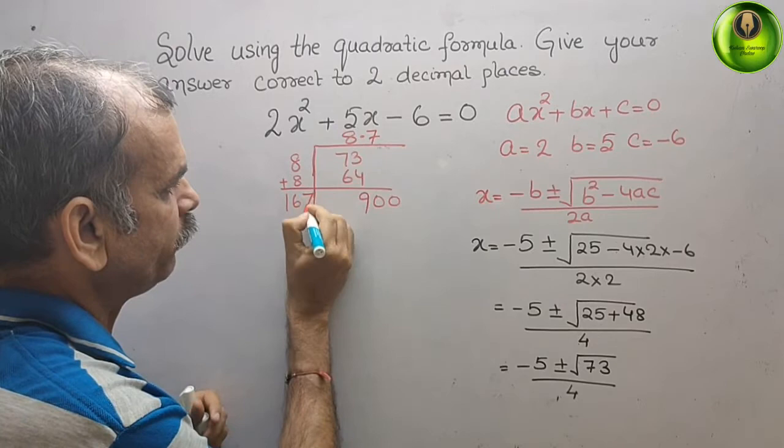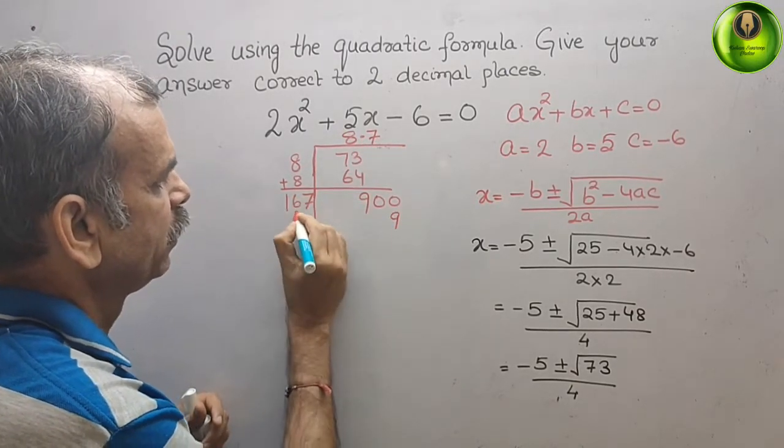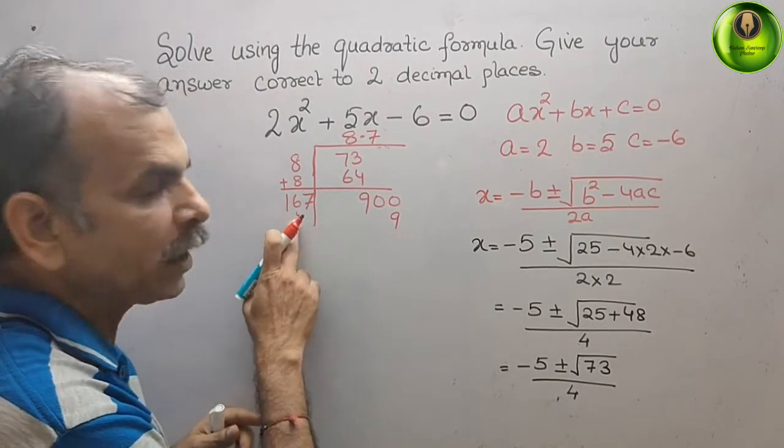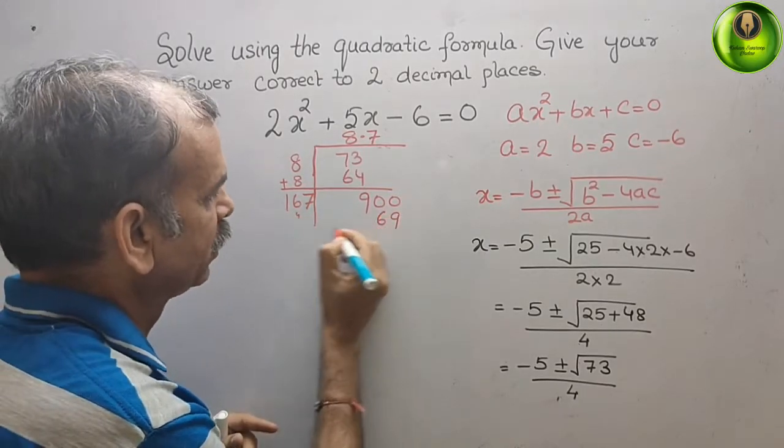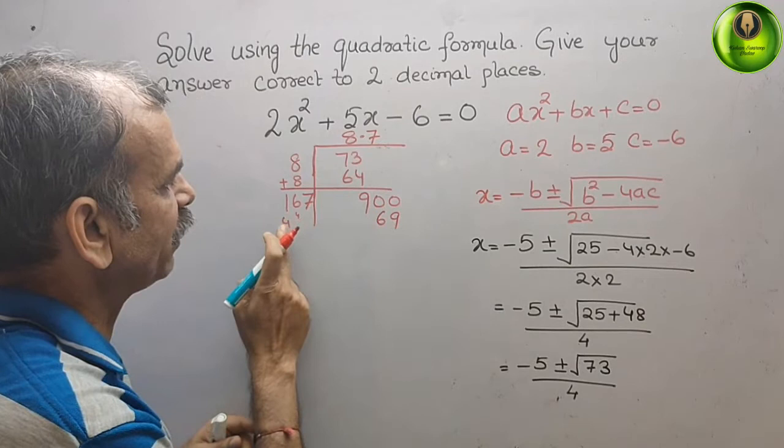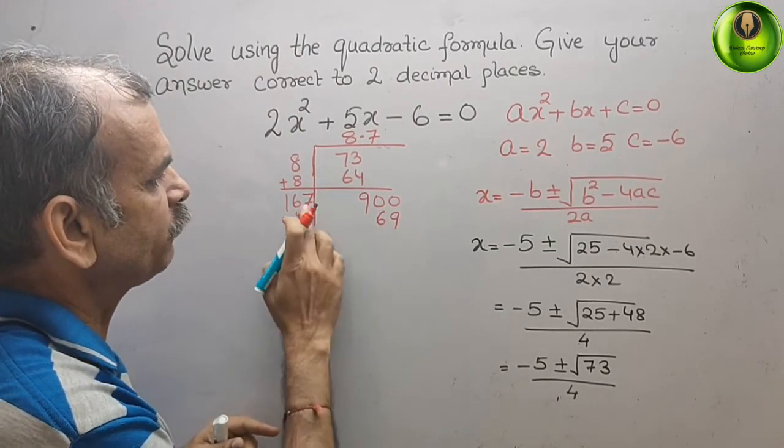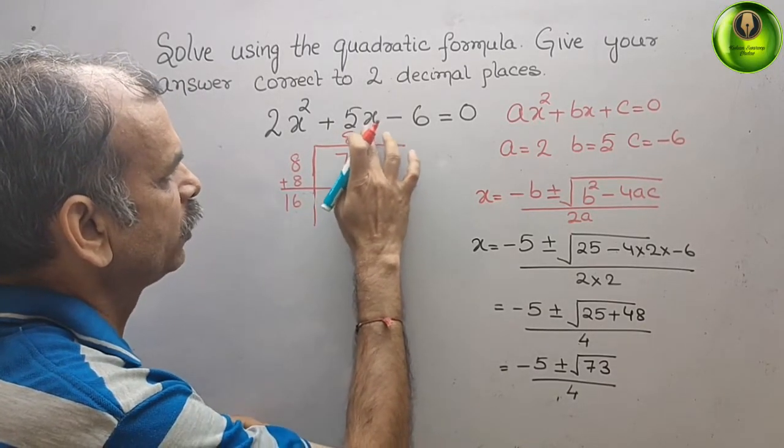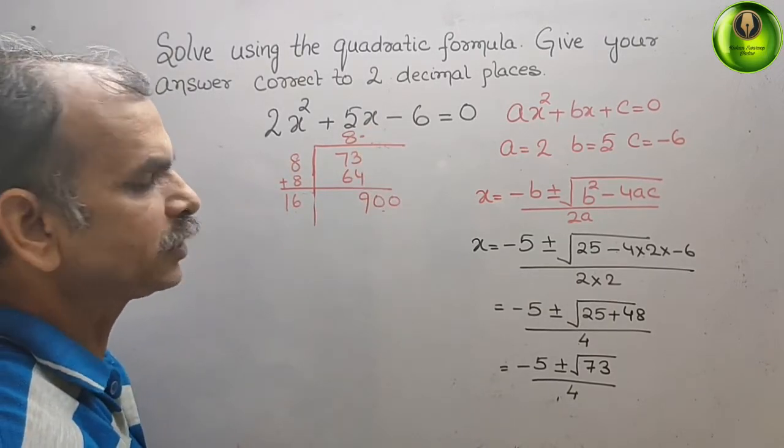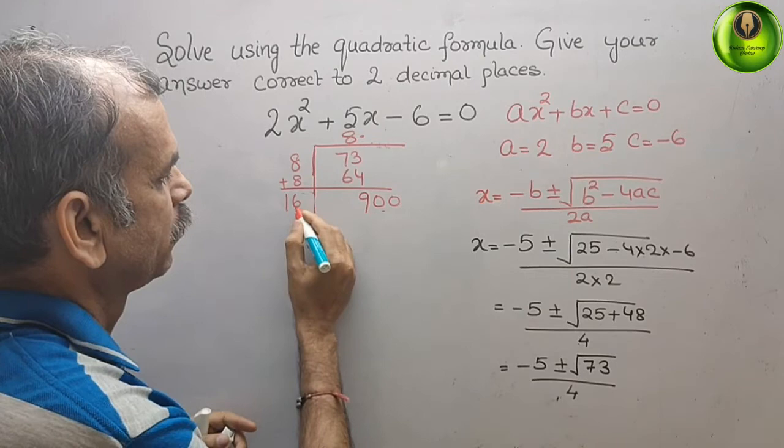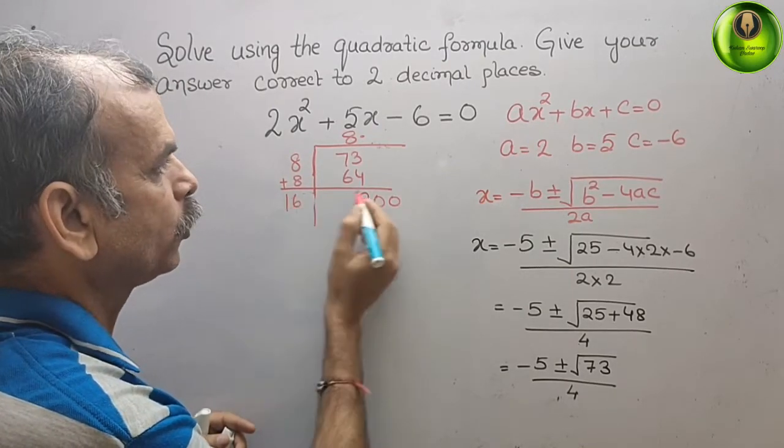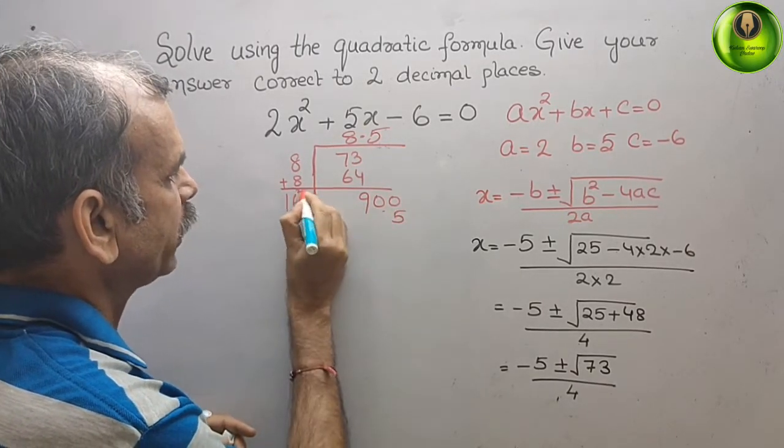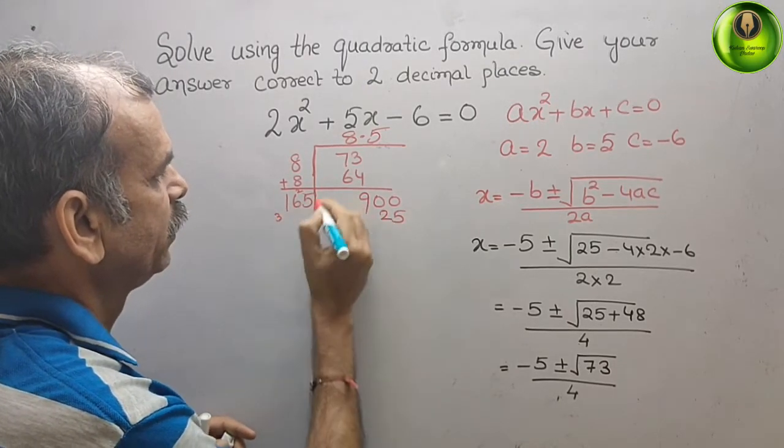7 here also we will write 7. 7 × 7 is 49, 4 carry, then 7 plus 6, 7 × 6 is 42 plus 4 is 46, 6 again 4, 7 × 1, 7 plus 4 is 11. So that means it will not go. 7, we will write here, what, maybe it will go at around 5 times. So we will write here 5. 5 × 5 is 25, 2 carry, 30, 32, 3 carry, then 8.